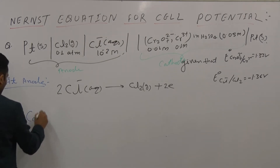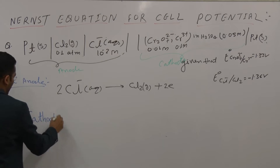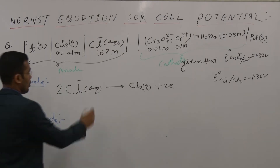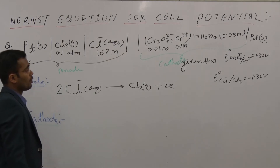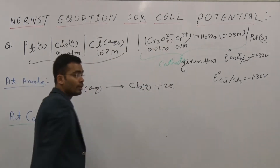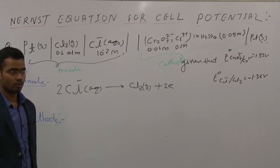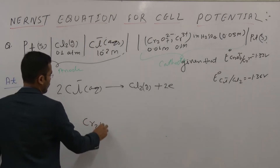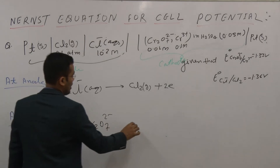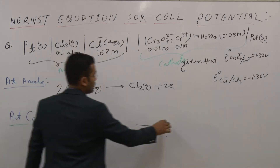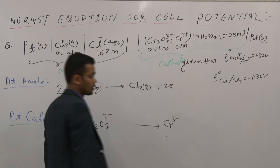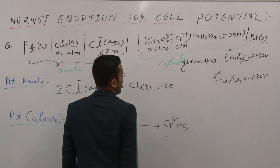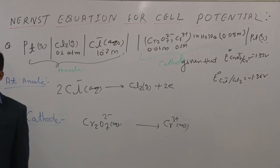At the cathode, reduction occurs — reduction is gain of electrons. So Cr₂O₇²⁻ will take electrons and convert to Cr³⁺ in acidic medium. The medium given is H₂SO₄, which is acidic. So the reaction is: Cr₂O₇²⁻ (aqueous) → Cr³⁺ (aqueous). Now you have to balance this reaction.